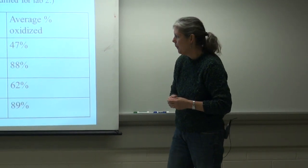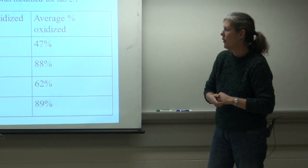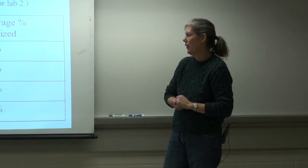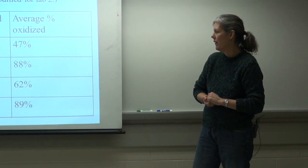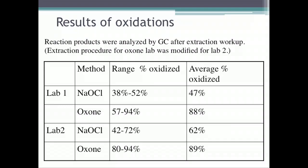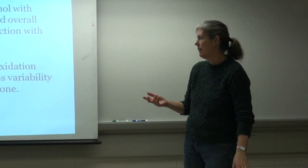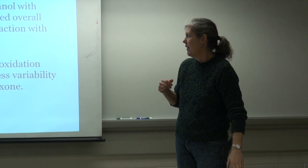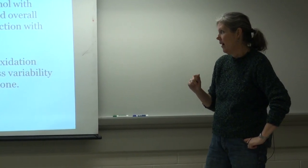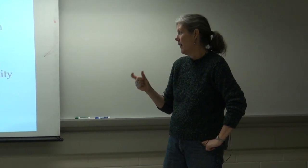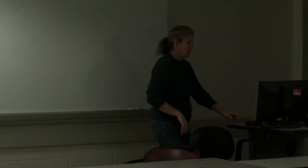In lab two, after we modified the procedure a little bit in the oxone reaction, we got similar ranges in the bleach/acetic acid reaction with a little bit higher overall percent oxidation — though this isn't anything different than I've seen in that lab in the last few years. But there was much better conversion of the alcohol to the ketone using the oxone reagent, and a smaller range. All students really had a great deal of success using the oxone in the second lab. It was a lot easier workup for the students and they enjoyed it.